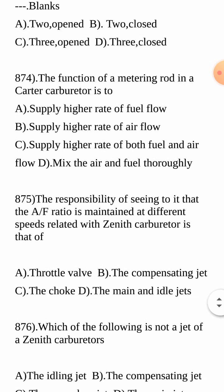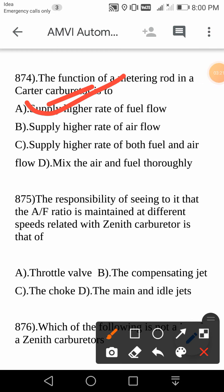Next question: The functioning of a metering rod in a Carter carburetor — is it to supply a higher rate of fuel flow, higher rate of air flow, higher rate of both fuel and air flows, or to mix air and fuel thoroughly? The thorough mixing of air and fuel is done by the carburetor itself, so the metering rod function is one of the first three. The answer is: to supply a higher rate of fuel flow — not air flow, not both.